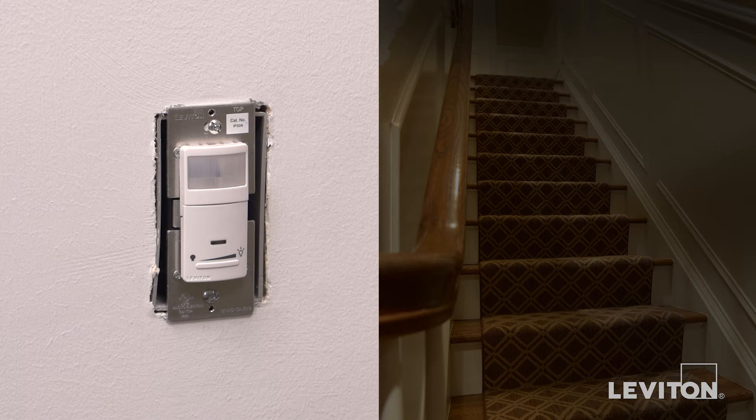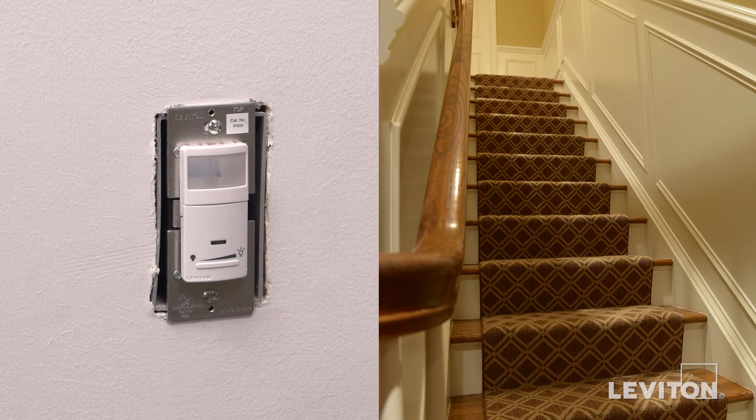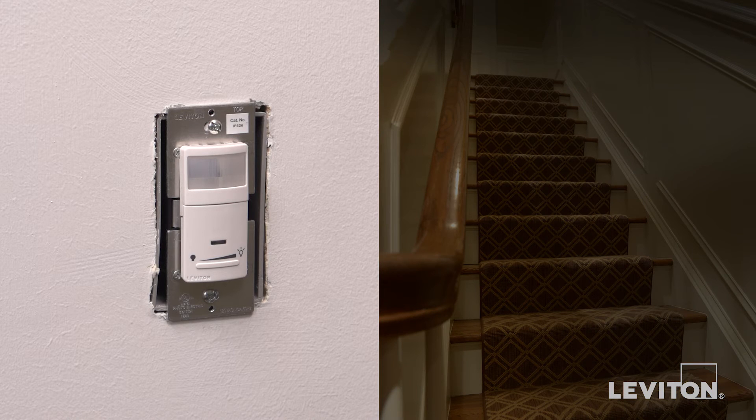For IPVD6, which is a vacancy sensor, you will press and release push pad to turn the lights on. As a vacancy sensor, lights must be manually turned on but will automatically turn off when the room is vacant and motion is no longer detected.